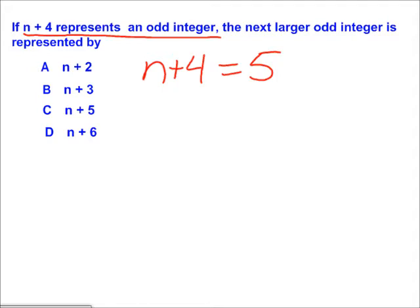In order to find the next larger odd integer, you must use the expression (n+4) plus x equals 7.